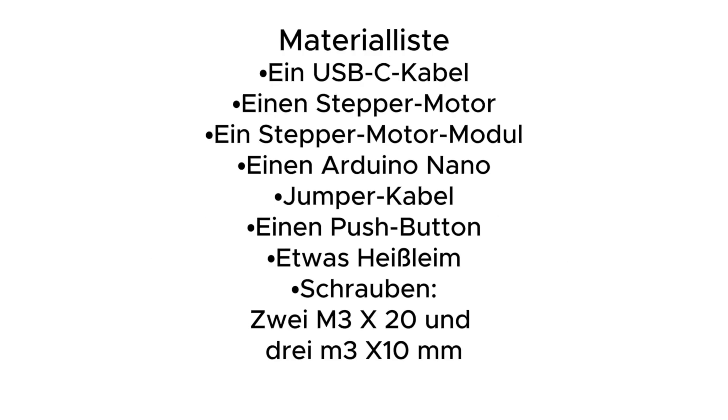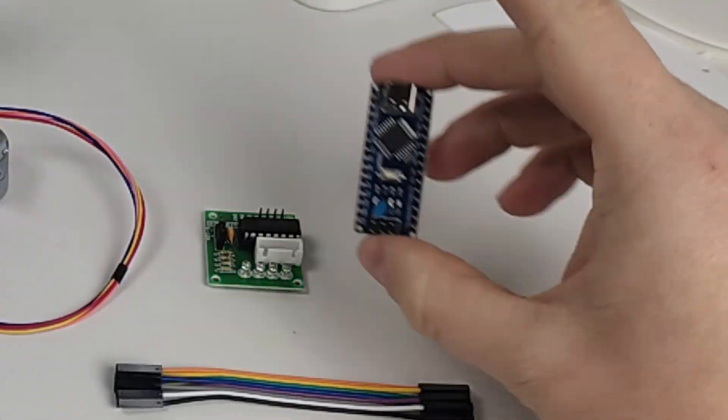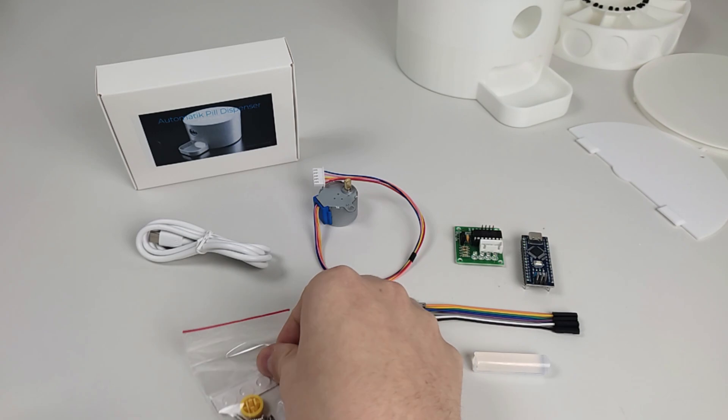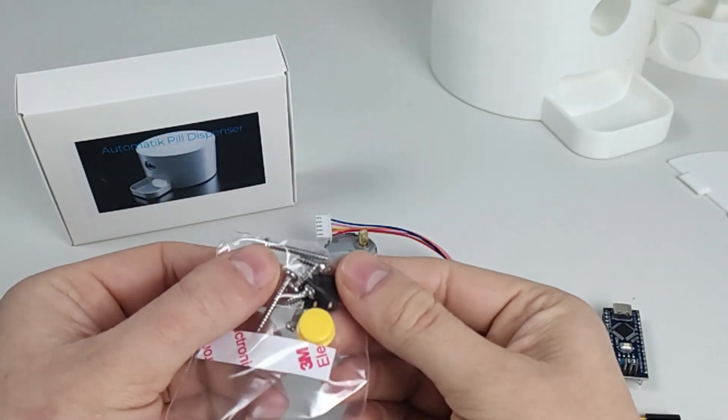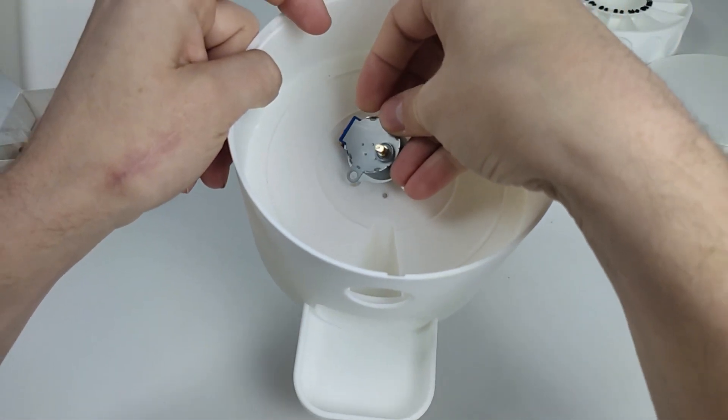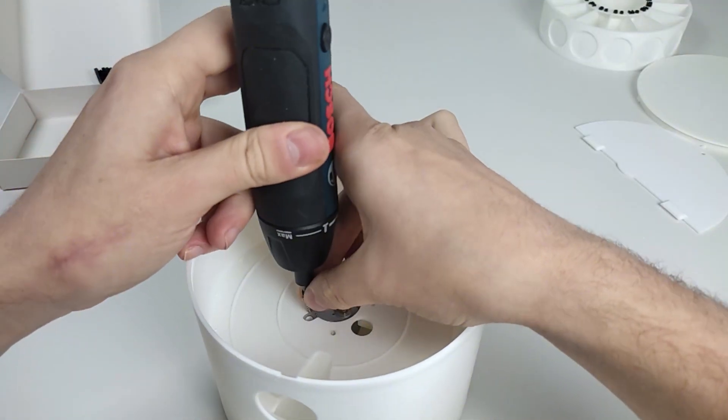Here is an overview of the parts you need. Insert the stepper motor into the main body and secure it with the two small screws.